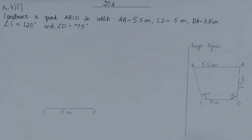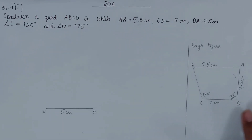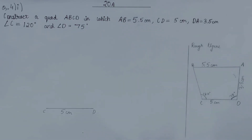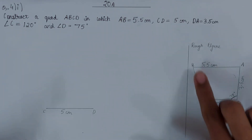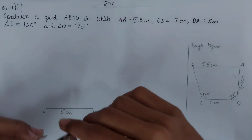Now we need to make two angles — one from point C and one from point D. You can begin with either angle. Let's begin with angle BCD of 120 degrees.